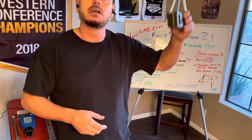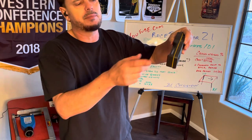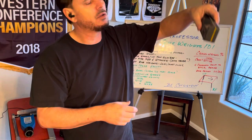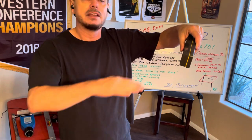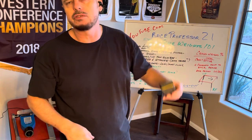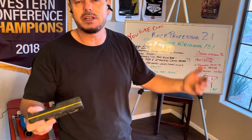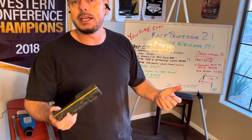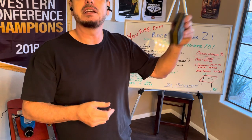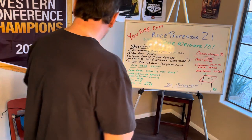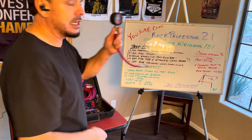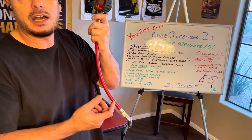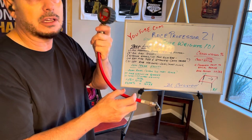A lot of dirt racers will measure front ride heights based on their upper A-arm angles. They'll put a smart level or digital level on the A-arm, write it down, and as they raise or lower the car that A-arm angle changes. This is really useful because when you're at the racetrack it's often not very level — you can get your ride height pretty close even if you've broken something. Measure it this way and make adjustments to your ride height accordingly.